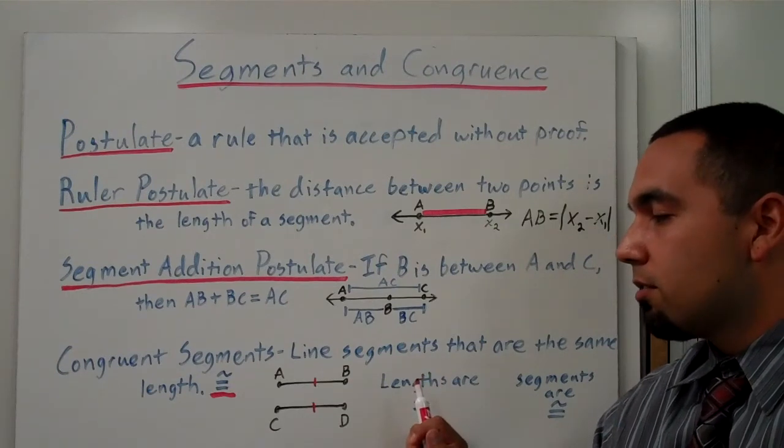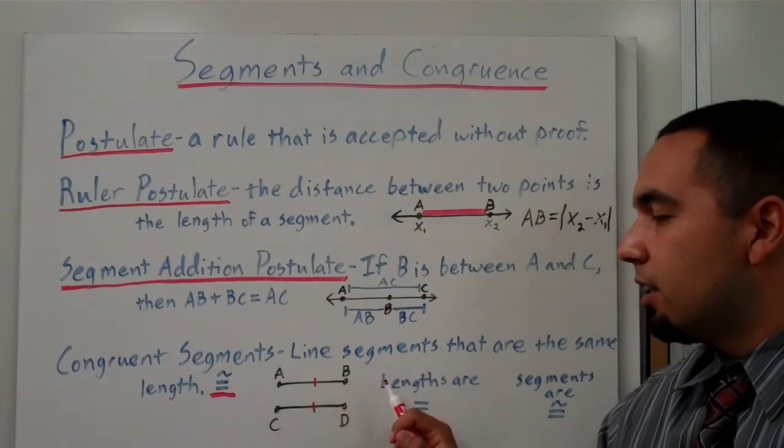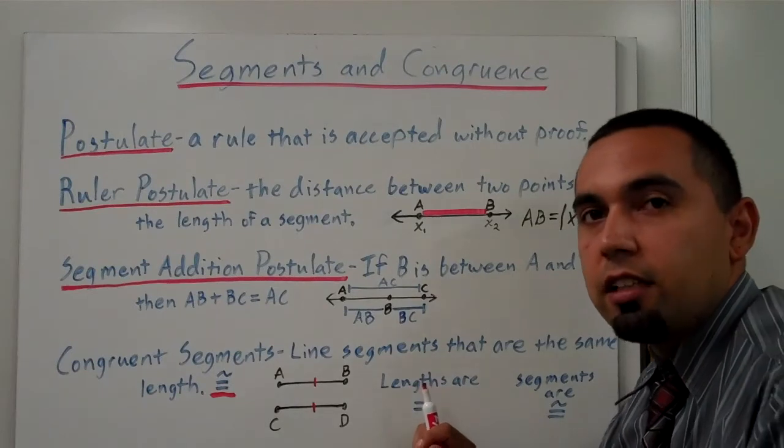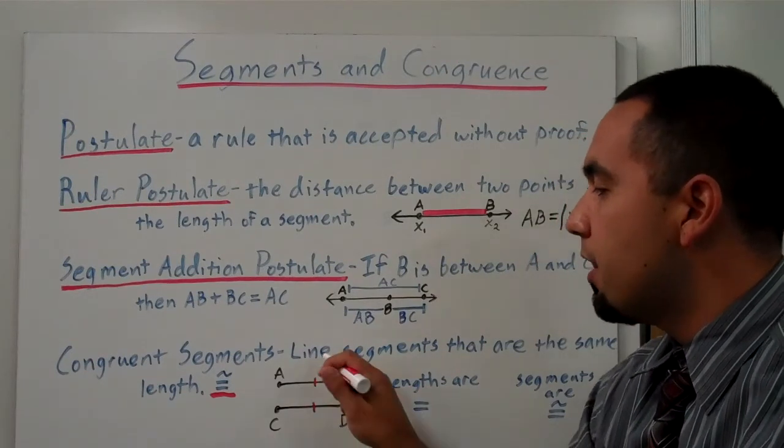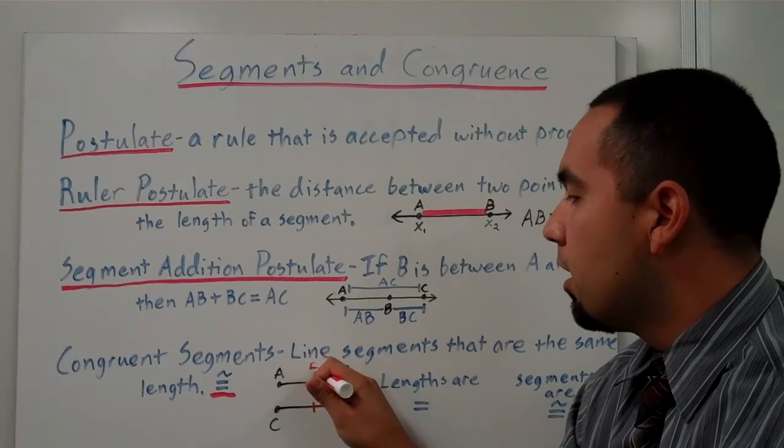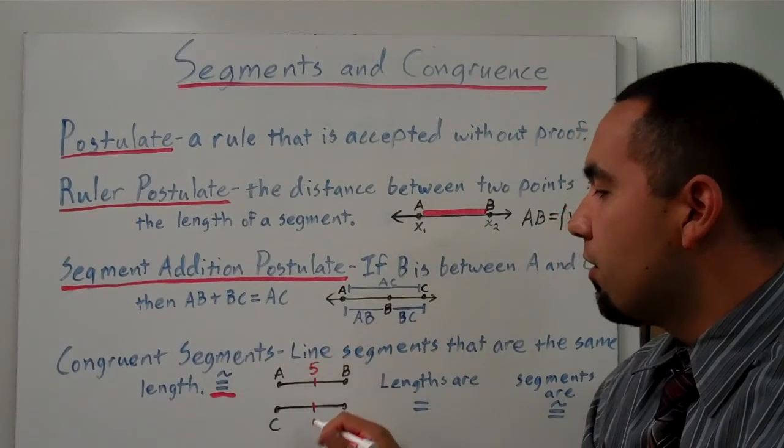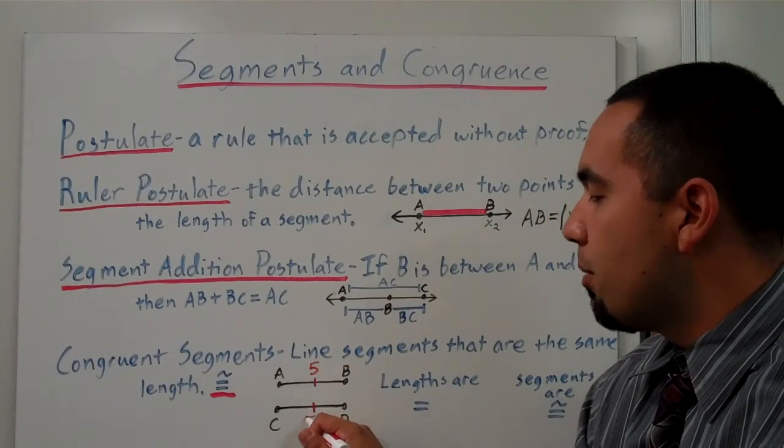So this does not mean that the lengths - we don't want to say that lengths are congruent. We want to say the lengths are equal. So when we talk about lengths, we can say that AB is equal to 5, and if it's congruent to CD, that means the length of CD is also 5.